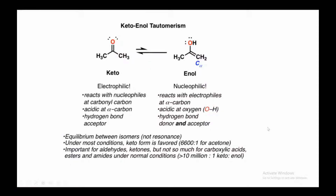In this video lecture I'll be talking about tautomerism and its types. I'll be discussing keto-enol tautomerism first in detail, and then more types of tautomerism later on. This video will be added into the organic chemistry playlist, which covers lots of concepts related to basic organic chemistry such as resonance, inductive effect, functional groups, and acidity/basicity.